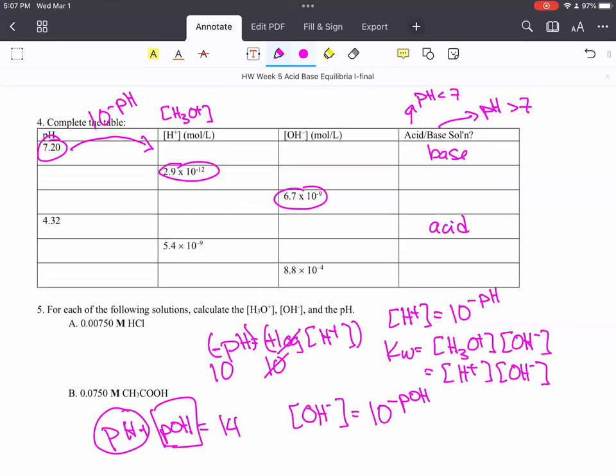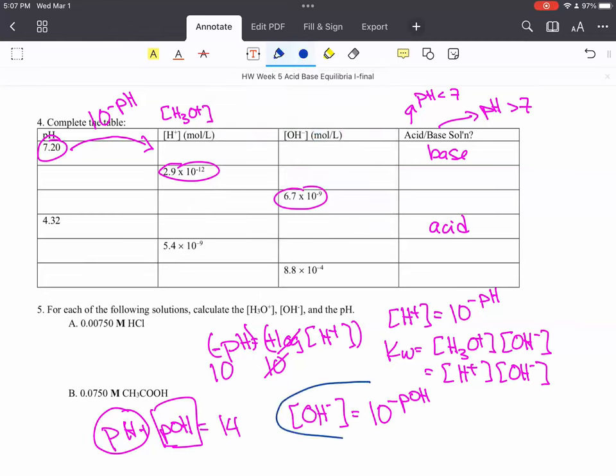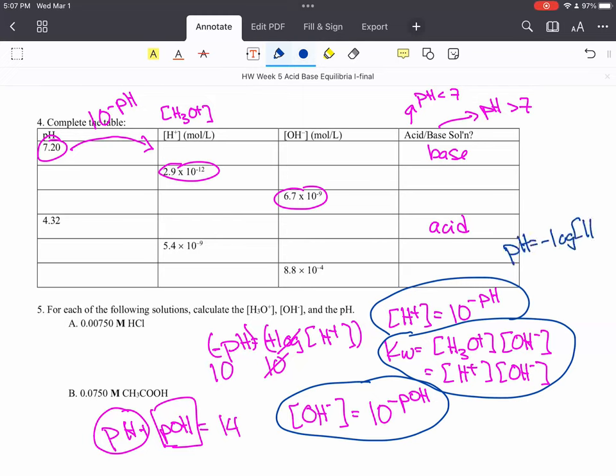So between this, these, here, and just a regular old pH equals minus log concentration of hydrogen ion, you should be able to move back and forth between all of these different concentrations and pHs.